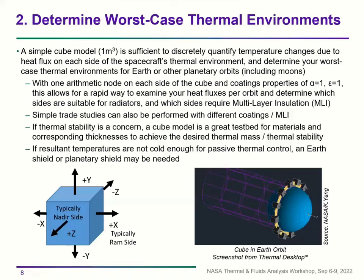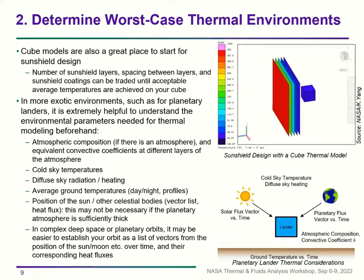Simple trade studies can be performed with different coatings and MLI. If thermal stability is a concern, the cube model is a good test bed for materials and corresponding thicknesses to achieve desired thermal mass and stability. If resultant temperatures aren't cold enough for passive thermal control, you can add an Earth or planetary shield to achieve desired radiated temperatures. Cube models are also a good starting point for sun shield design — understanding the number of layers, spacing, and coatings needed.